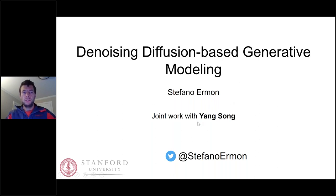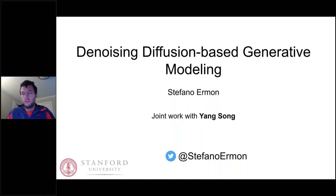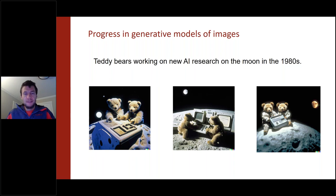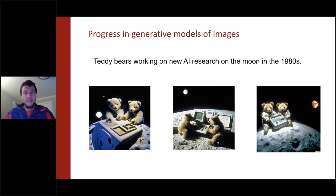Thank you for the kind introduction. The topic today is diffusion-based generative models, one of the hottest topics in AI. There has been an incredible amount of progress in the last few years in technologies that can essentially synthesize media content automatically — models that can generate text, images, video, music, and audio. Images are perhaps the most exciting application.